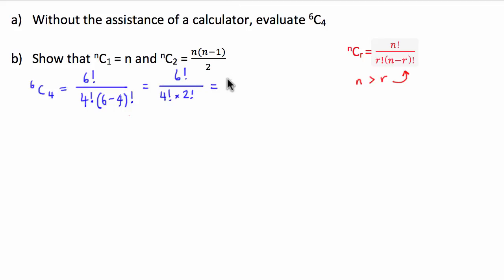So what we're going to do is we're going to break this 6 factorial down. And what I can do here is I can go, well, 6 factorial is equal to 6 times 5 times 4 factorial. And then I've just got over the base, I've got 4 factorial times 2 factorial.